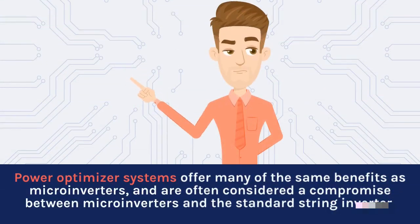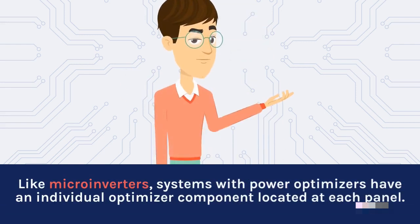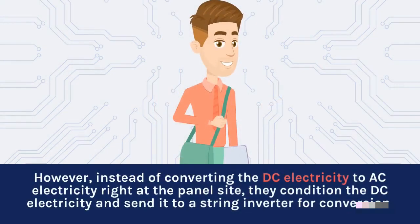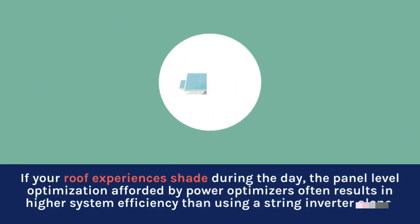Power optimizer systems offer many of the same benefits as microinverters, and are often considered a compromise between microinverters and the standard string inverter. Like microinverters, systems with power optimizers have an individual optimizer component located at each panel. However, instead of converting the DC electricity to AC electricity right at the panel site, they condition the DC electricity and send it to a string inverter for conversion. If your roof experiences shade during the day, the panel-level optimization afforded by power optimizers often results in higher system efficiency than using a string inverter alone.